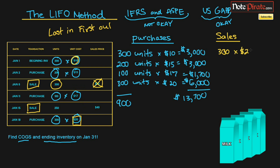So that's the first sale, and we're expensing it using the last-in unit cost. Looking at our milk example in the bottom right, what we're doing with LIFO is expensing the most recent purchase first — that's the freshest milk at the back of the shelf. We're getting rid of that most recent inventory unit.